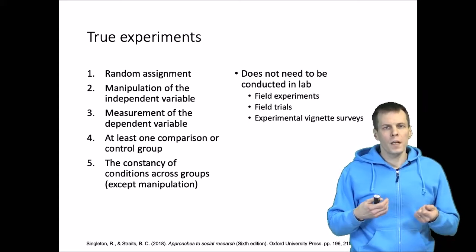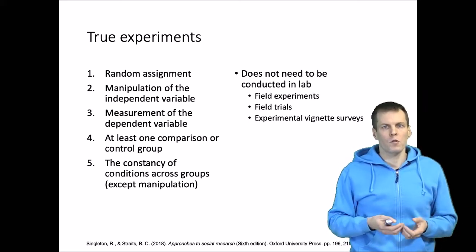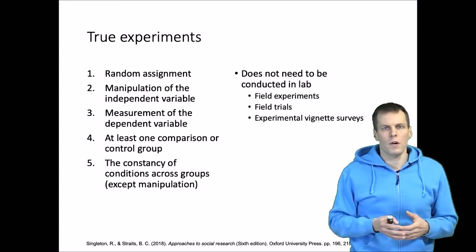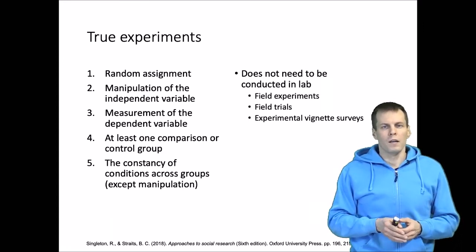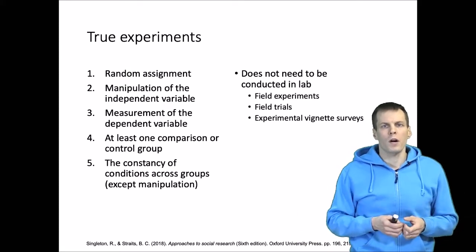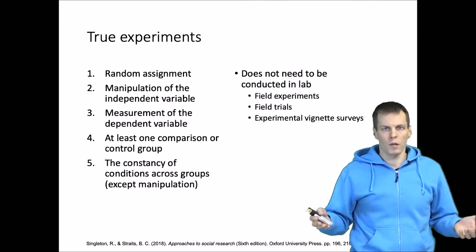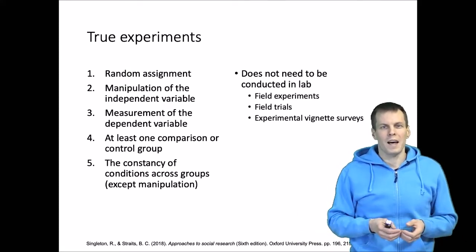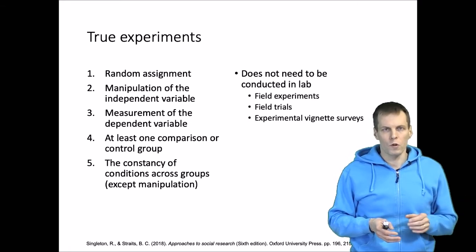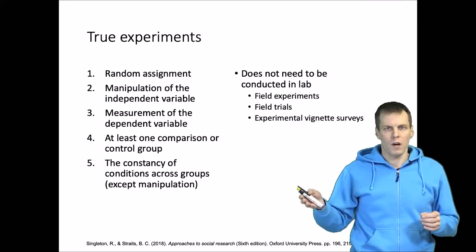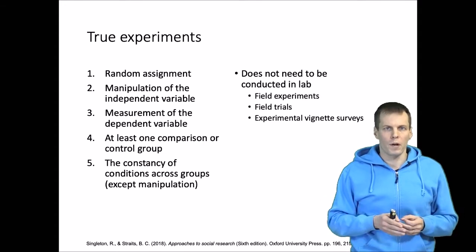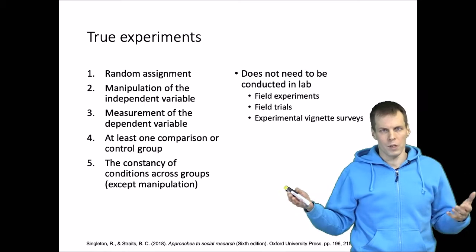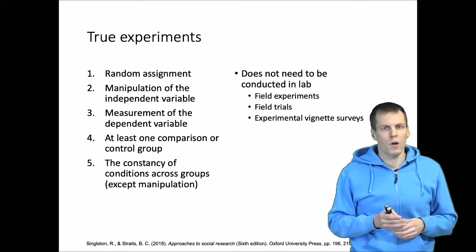We can also do field trials, where 'trial' refers to trying out something. For example, if we have schools, we could get a hundred schools to participate in a trial of an anti-bullying program, then half of those schools would implement the program, the other half would serve as the control, and we would compare the outcomes after the program is done or some years later.